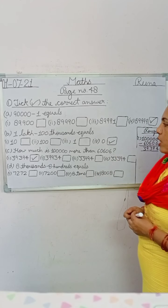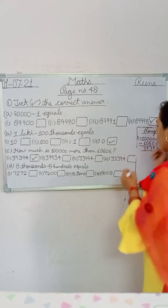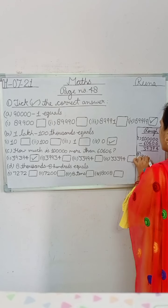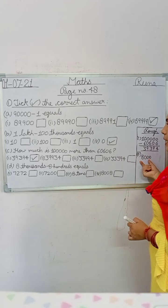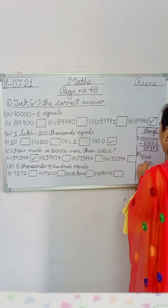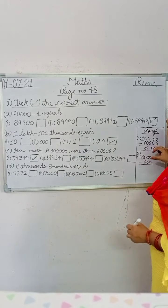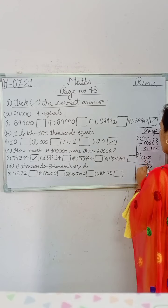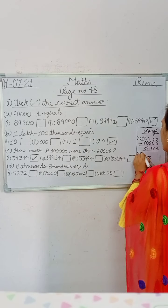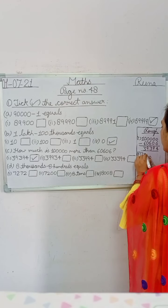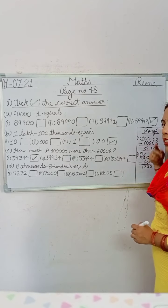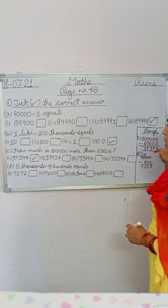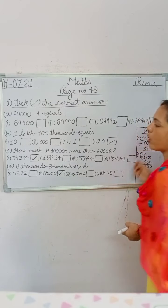In D part you have given eight thousand minus eight hundred. Eight thousand means ones, tens, hundreds, thousands. Write 8,000 minus 800. Zero minus zero is zero, zero minus zero is zero. Regrouping starts: cut eight and write seven, cut ten and write zero, cut zero and write ten. Ten minus eight is two, and note down seven. So seven thousand two hundred is your correct option.